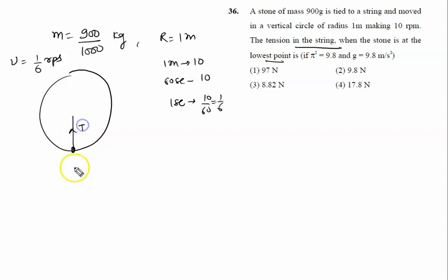The tension is T here, the weight is acting in the downward direction, that is mg, and here speed is given by v. So we'll write net centripetal force is given by T minus mg.